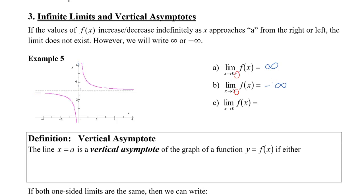Now the last question here is asking what is the limit as x approaches 0. Because the left-hand and the right-hand limit do not match — they're not the same — then we say that the limit does not exist, and we can write DNE.